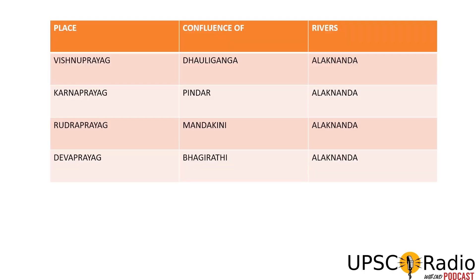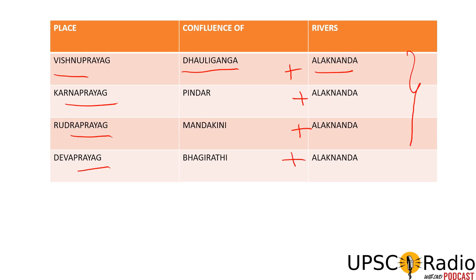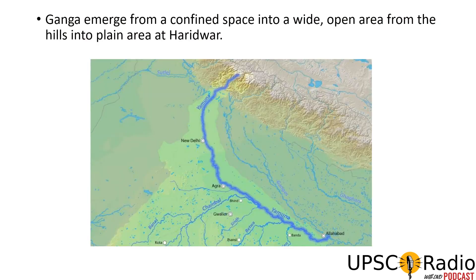You can see this table: Vishnu Prayag — Dauli Ganga joins; Karna Prayag — Pindar joins; Rudra Prayag — Mandakini joins; Deva Prayag — Bhagirathi joins. This table is very important for Prelims.